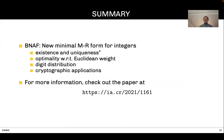To conclude and as a summary, what we saw in this talk is that new form, the BNAF. We showed that the BNAF always exists and is unique, that it is optimal—meaning that the Euclidean weight is minimal—we also saw the digit distribution, and we covered a couple of cryptographic applications. If you want to know more on the topic, I invite you to check out the paper that is available on ePrint. Thank you.